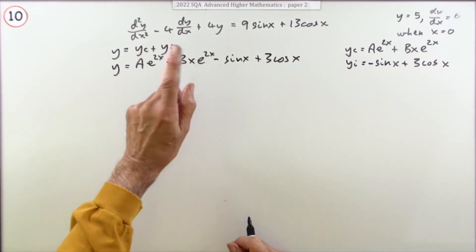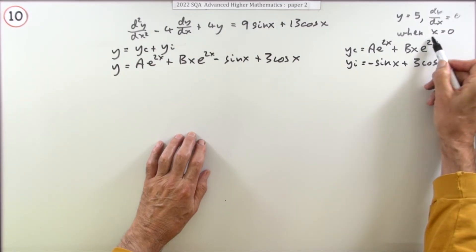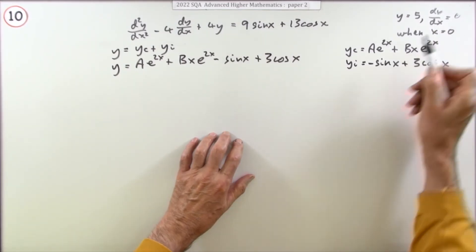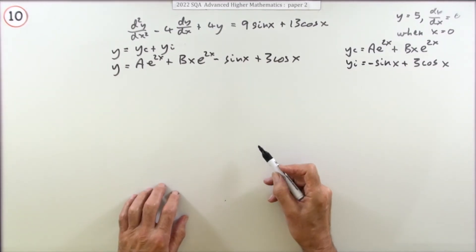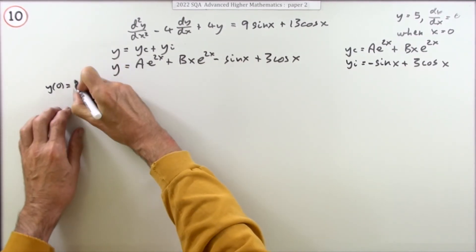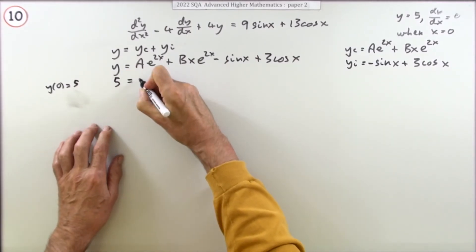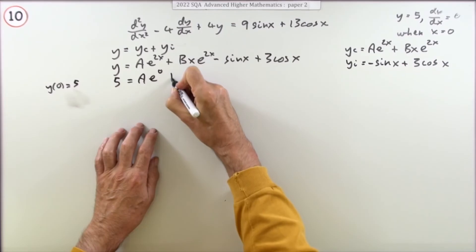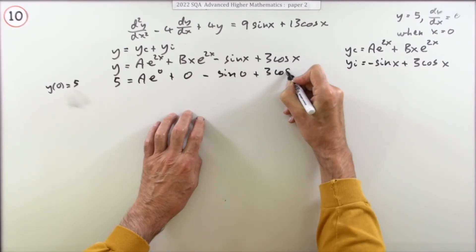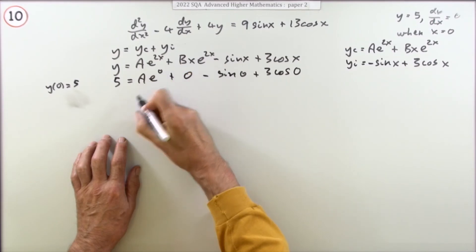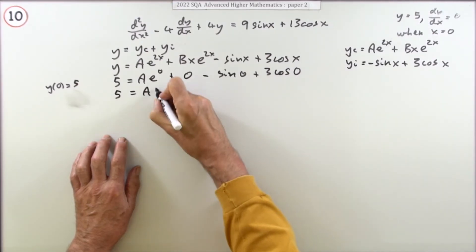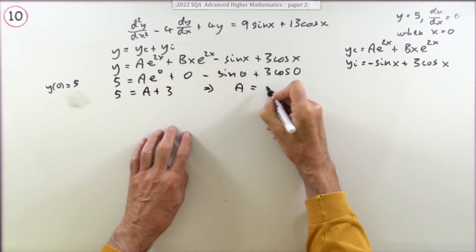The initial conditions are y(0) = 5 and y'(0) = 0. Using y(0) = 5: substituting x = 0 gives 5 = A·e^0 + B·0·e^0 − sin(0) + 3cos(0) = A + 0 − 0 + 3 = A + 3. So A = 2. Finding A gets a mark.